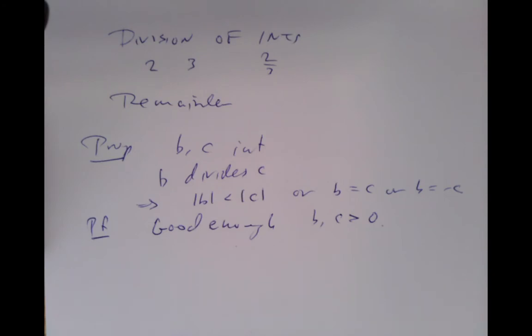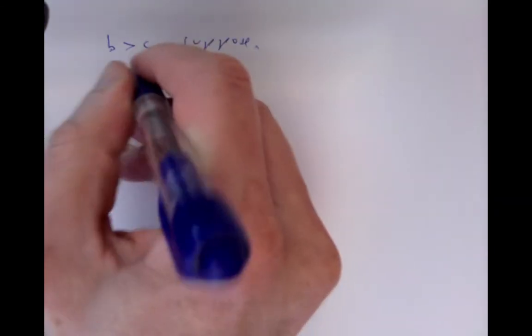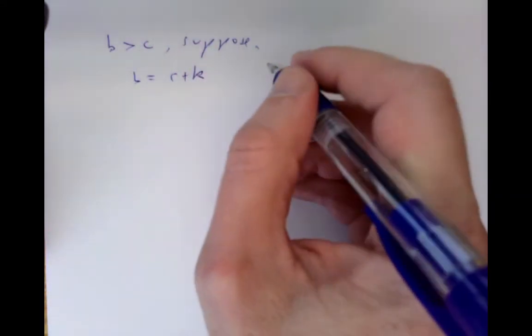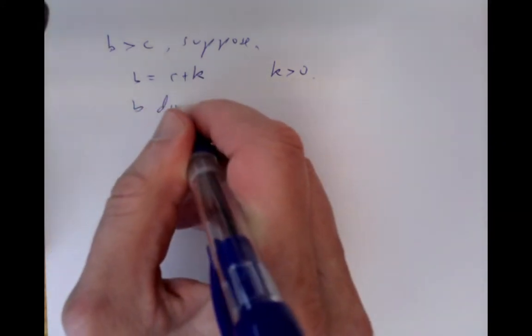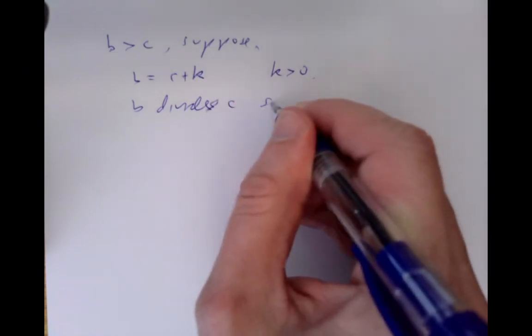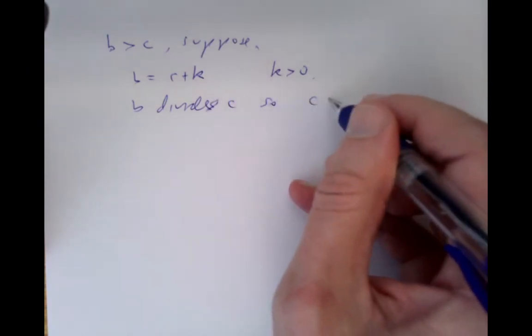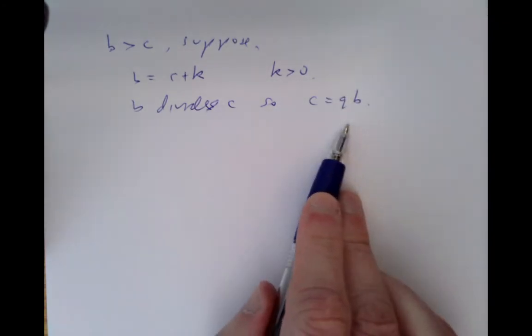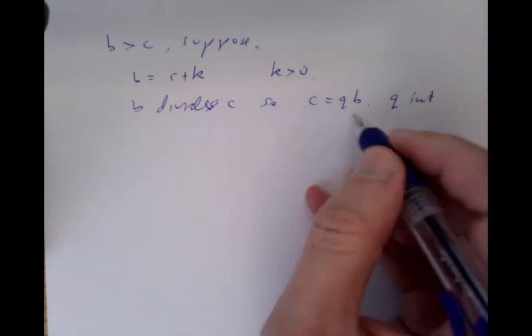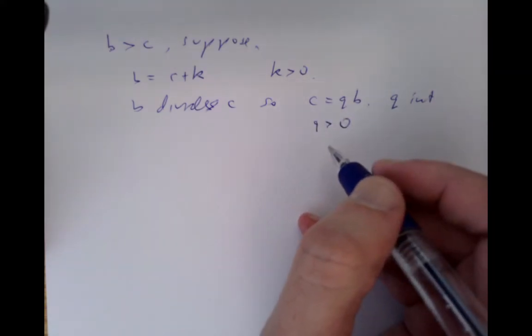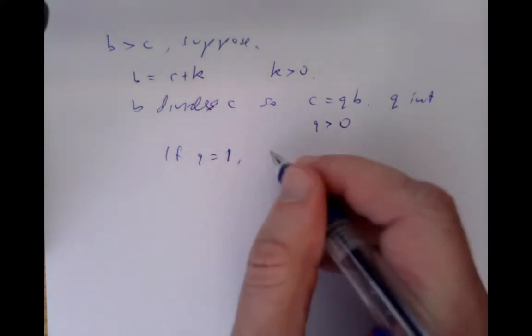Suppose that we're wrong about this — suppose that b is positive and bigger than c. We can write b as c plus k, where k is some positive integer, and b, c, and k are all positive. So b divides c, meaning c has to be some multiple of b: c equals q times b, where q is our quotient, an integer. Since c and b are positive, q has to be positive. And if q equals 1, then b equals c and we're done.